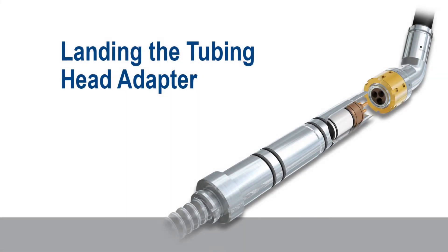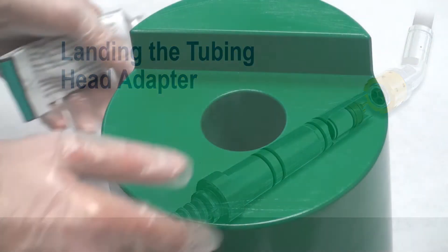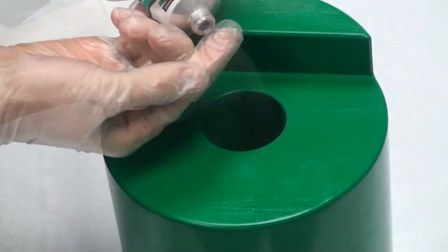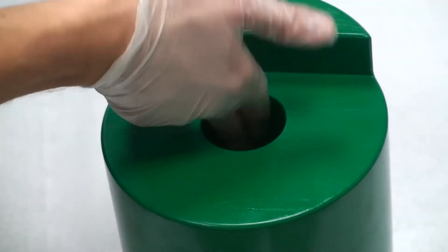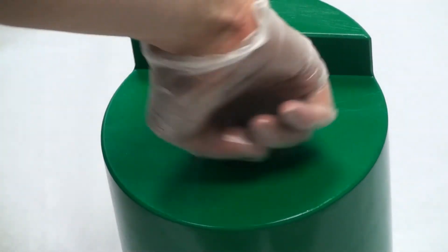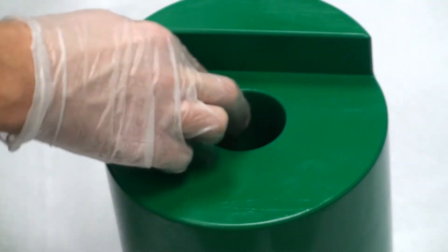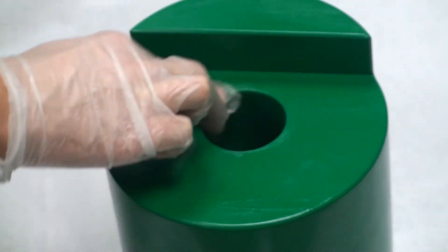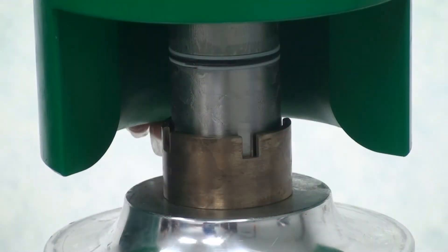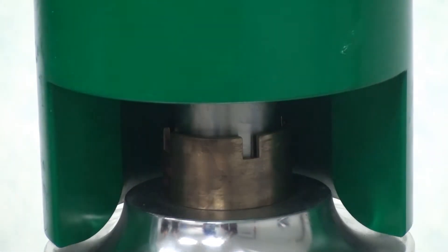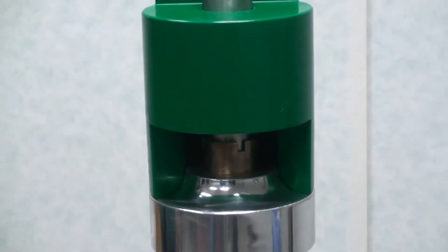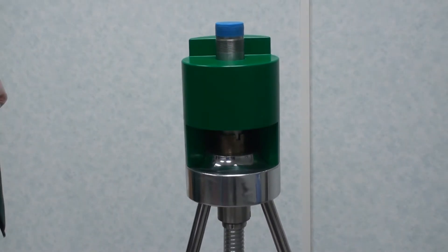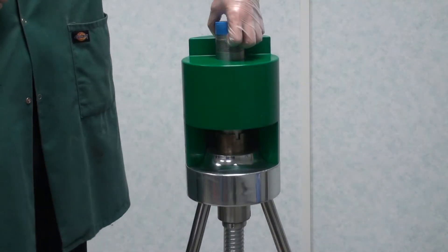Landing of the tubing head adapter. Before the tubing head adapter is landed, confirm that the seal surfaces within are clean and in good condition. Smear silicon grease liberally around the internal diameter of the bore. The lowering of the tubing head adapter should be supervised to prevent any potential damage. Particular attention should be paid to the threads and elastomer seals on the wellhead penetrator body.